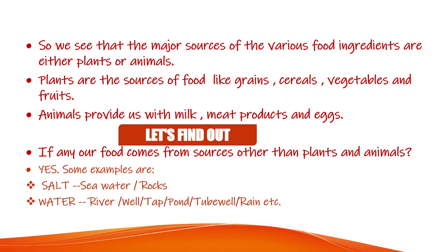Let's find out if any food comes from sources other than plants and animals. The answer is yes. For example, salt — we get salt from sea water or rocks. We also use water for cooking various food items, and water is obtained from various sources like rivers, wells, taps, ponds, tube wells, and rain.